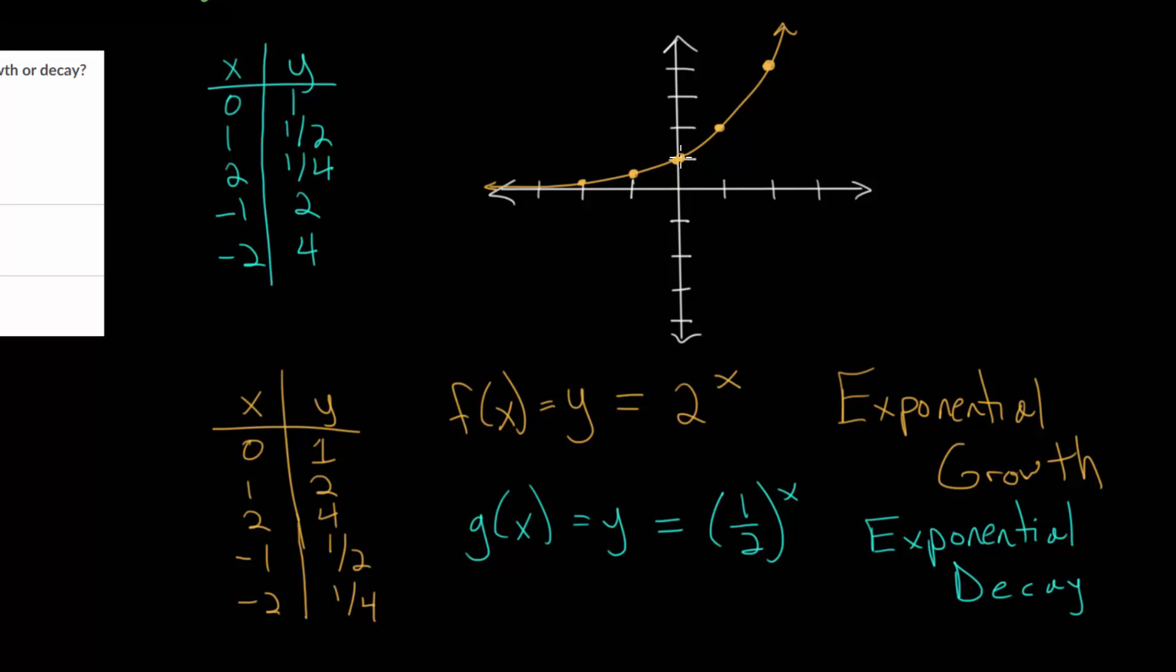So let's plot these points. It goes through at 0, 1, just like our growth function. It goes through at 1, 1 half. At 2, 1 fourth. If we did 3, it would go through at 1 eighth. If we do minus 1, it goes through at 2. And at minus 2, it goes through 4. If we did minus 3, it would actually go through at 8 for the y value. So let's draw this curve in. So you can see the blue curve, that's our g of x. That's our exponential decay function. And the orange curve, f of x, that's our growth function.